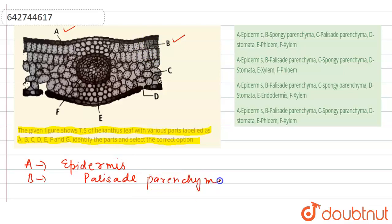And if we talk about the second type, then this is spongy parenchyma. So this is spongy parenchyma, the cortex part of the leaf.